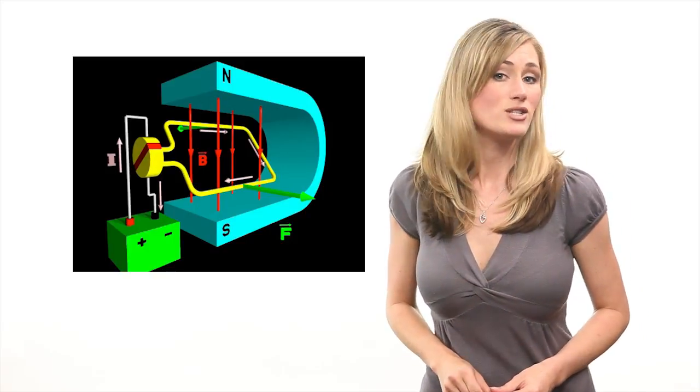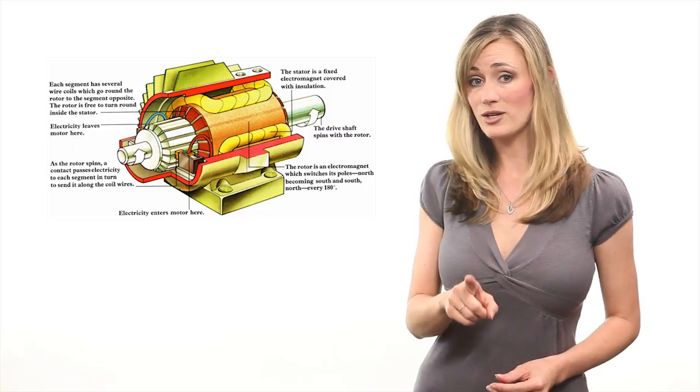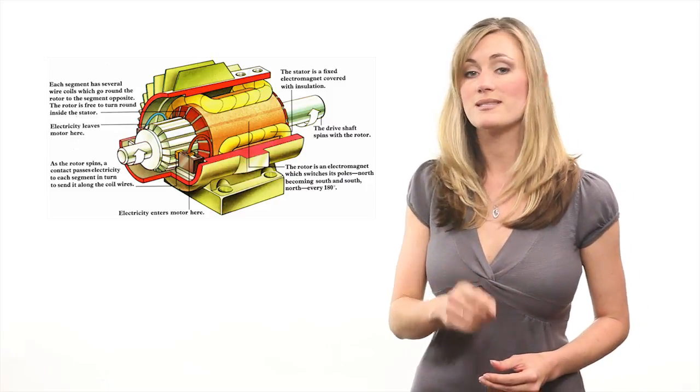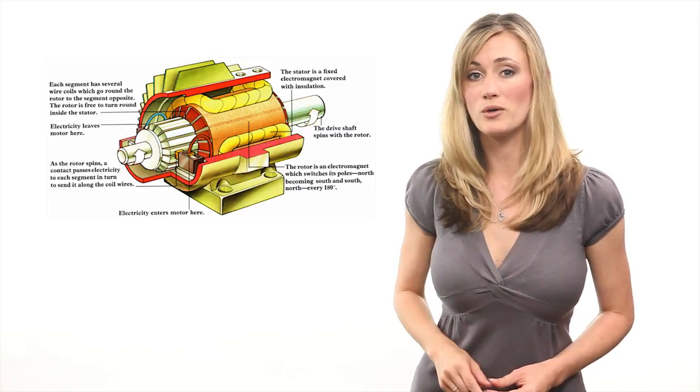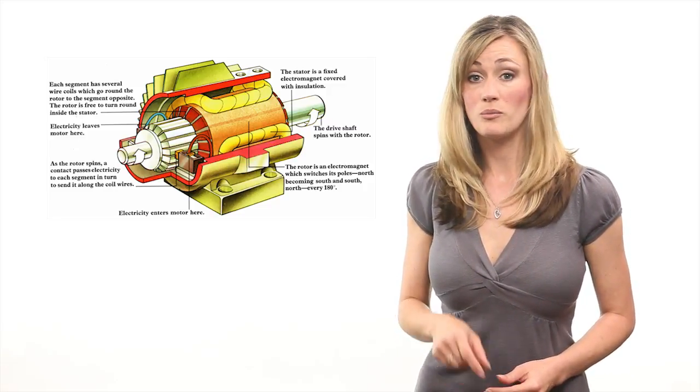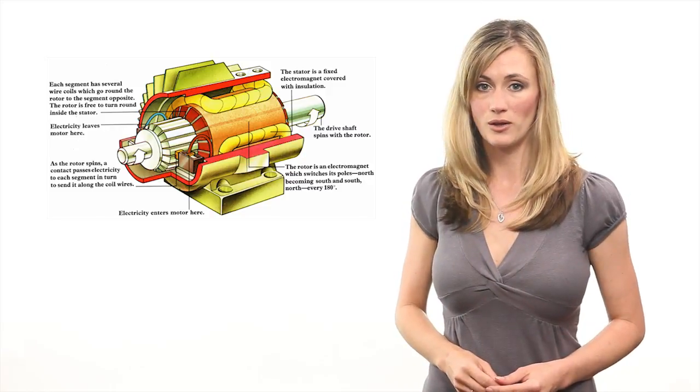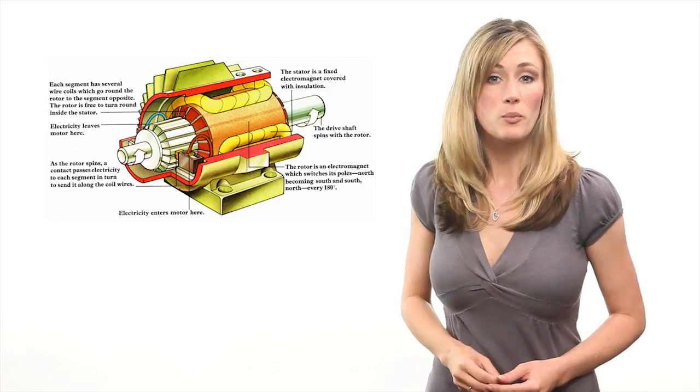An electric motor has a stationary part called a stator and a rotating part called a rotor. The stator generates a magnetic field, and the rotor is an electromagnet that rotates inside this field. Because opposite poles of a magnet attract and like poles repel, the magnetic south pole of the rotor will move toward the magnetic north pole of the stator. By repeatedly switching the direction of the current and the rotor's electromagnet, the poles keep flipping sides, and this rotational motion continues. The output shaft of the motor is attached to the rotor, and the rotational motion drives the device attached to the motor.